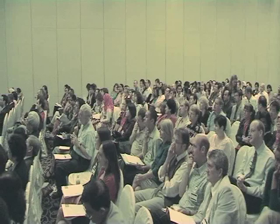This is a graph done of observations in the back of science classrooms in 1980. There are two graphs there — the white bar is year 10, the black bar is year 7. And the interesting thing is the practical comes second. This is English classrooms in that sense. But still, although you conceive of science as being a practical subject, it's essentially one where students spend a lot of time listening.